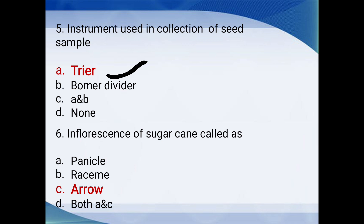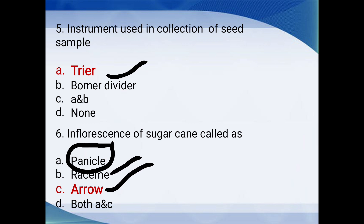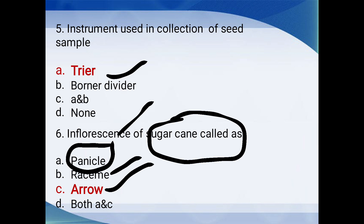Inflorescence of sugarcane is called: panicle, resin, arrow, or both A and C? The answer is arrow. For rice it is panicle, for castor it is raceme, and for sugarcane the inflorescence is called arrow.